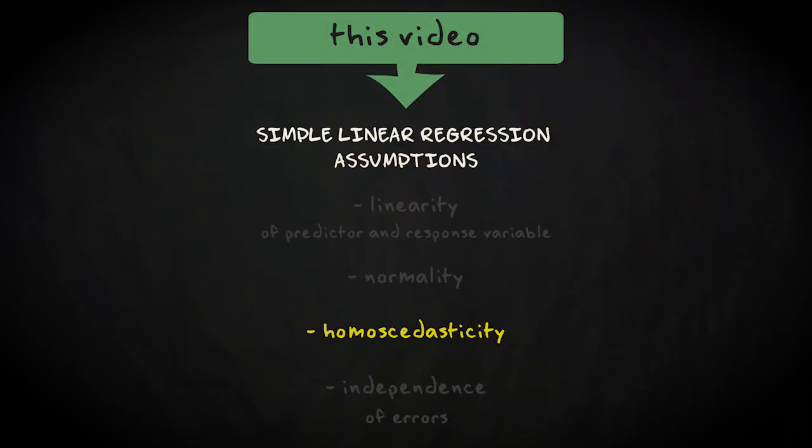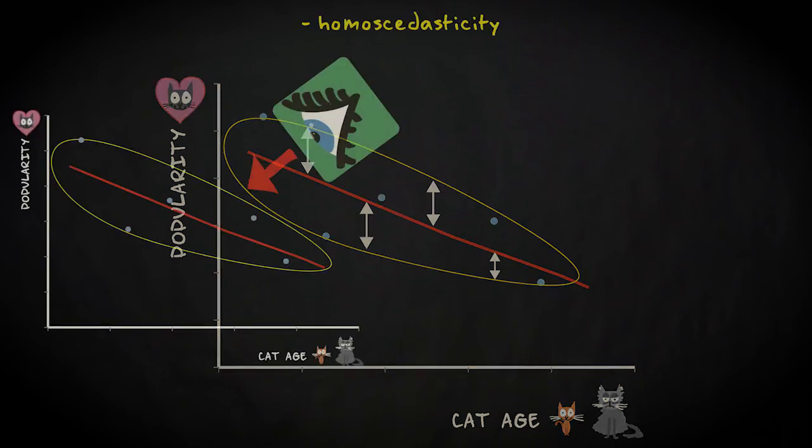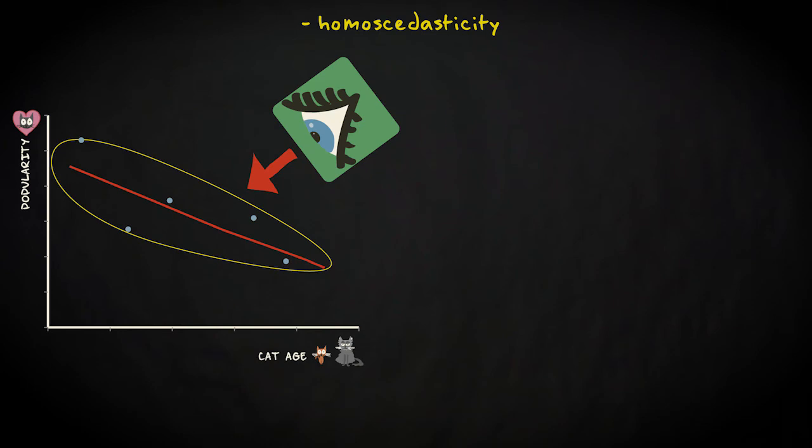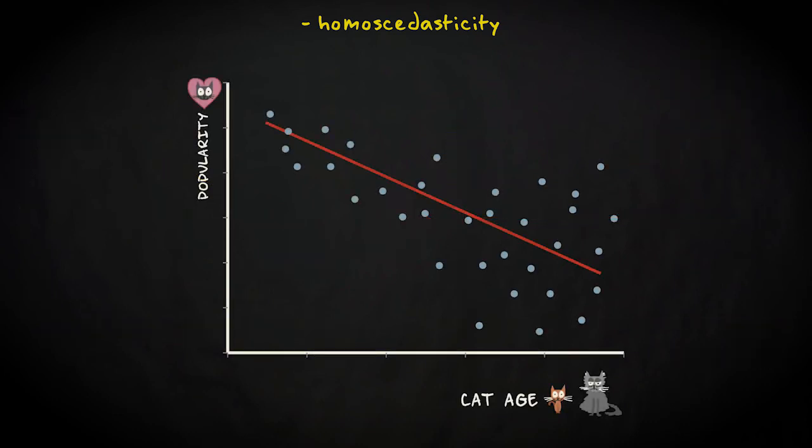The assumption of homoscedasticity means that the variability of the residuals has to be the same for all values of the predictor. So the prediction error should be just as large for old cats as for young cats. You can check this assumption by looking at the scatter plot or at the residuals plotted against the predictor, or predicted values. If the residuals fan out at some point, then the assumption of homoscedasticity is violated, and regression analysis shouldn't be performed at all. Or perhaps a transformation of the response variable or predictor is in order.